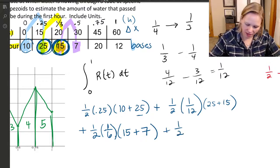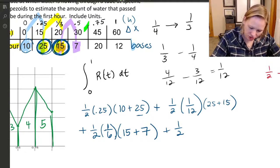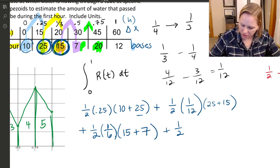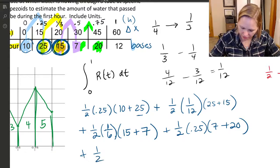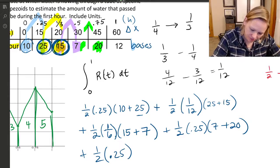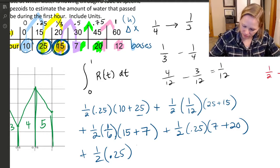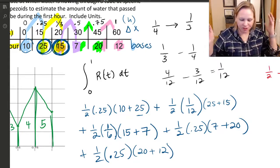Keep on going, one half. This next one, the change here is 0.25, a nice easy number. 0.25, and then the two bases are 7 and 20. And then one more trapezoid to go, one half. The change here is 0.25 again. 0.25, and then the two bases are 20 and 12.